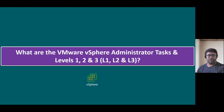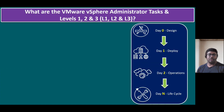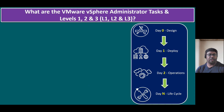Before jumping into the actual concept, let's quickly recap our previous session. Whenever we are planning to do any administrative task, it's divided into four parts: Day zero, day one, day two, and day N. Day zero is mainly about solution design. Day one is about deploy — in other words, implementation. Day two covers all the operations. Day N is nothing but the lifecycle — regular activities, updates, and upgrades.